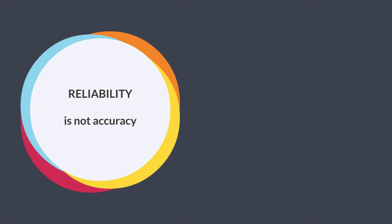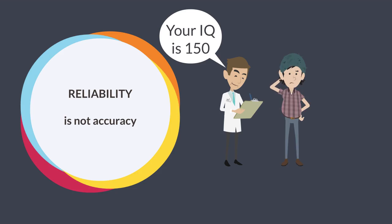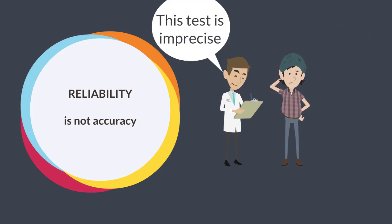A test can measure the IQ of a person at 150 every time they sit it, but if their IQ is actually 110, the IQ test is reliable but imprecise.